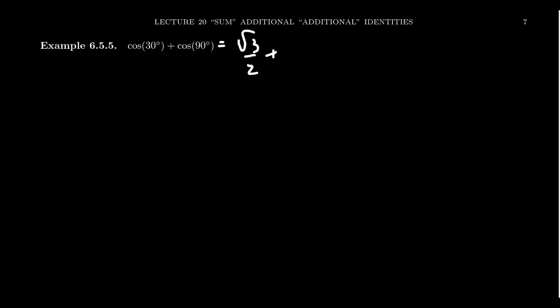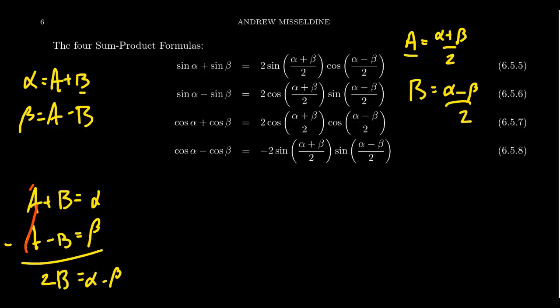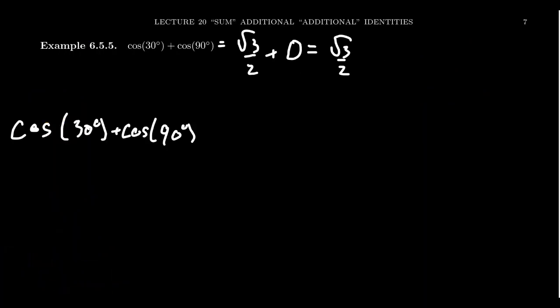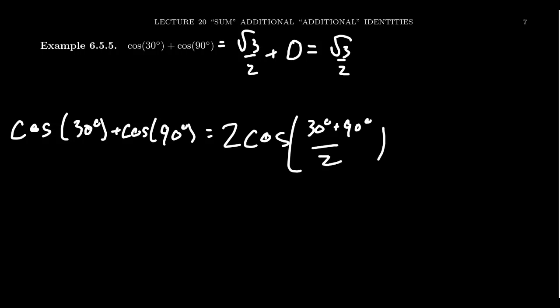Consider the example: cosine(30°) + cosine(90°). This isn't too hard to compute directly — cosine(30°) = √3/2 and cosine(90°) = 0, so the answer is just √3/2. But we could also treat this as a sum and convert it into a product. We look for the cosine-plus-cosine identity: cosine(α) + cosine(β) = 2 cos((α+β)/2) cos((α−β)/2). Applying that identity with α = 30° and β = 90°, we get 2 cos((30+90)/2) cos((30−90)/2).